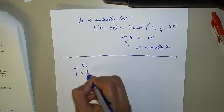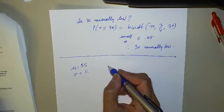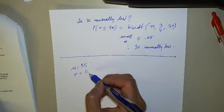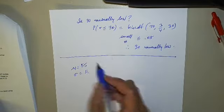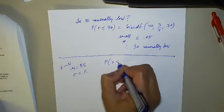Small number less than or equal to 0.05, therefore 30 is unusually low. You're sure, right?